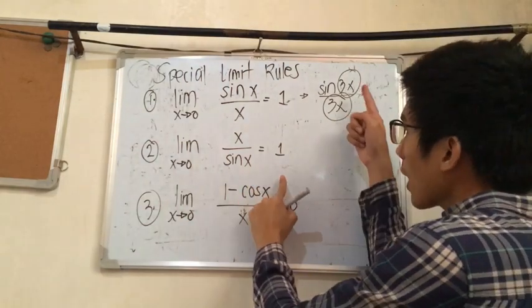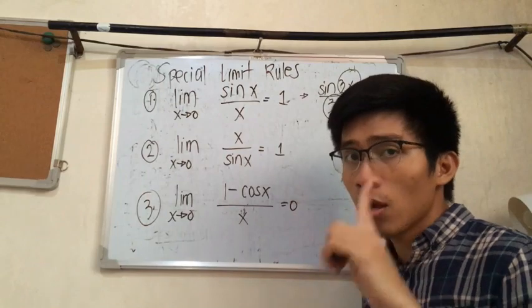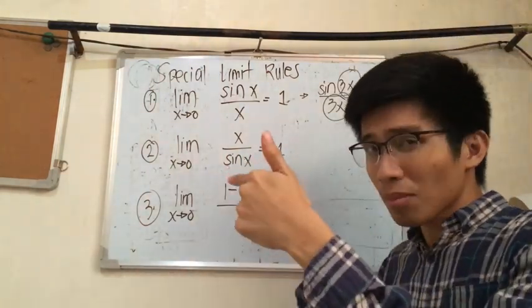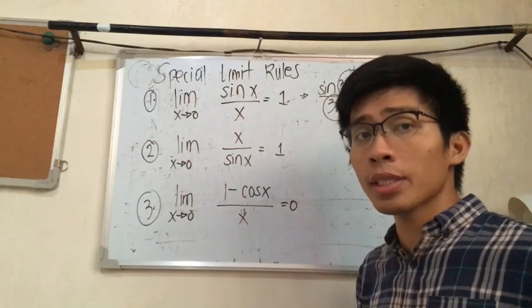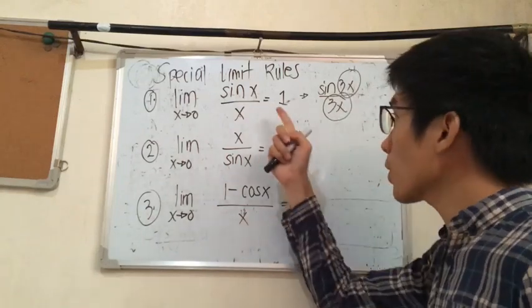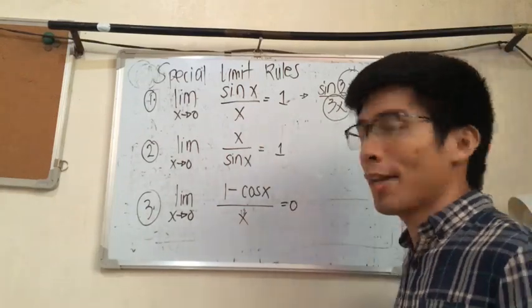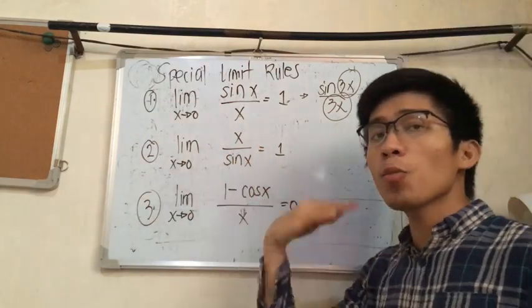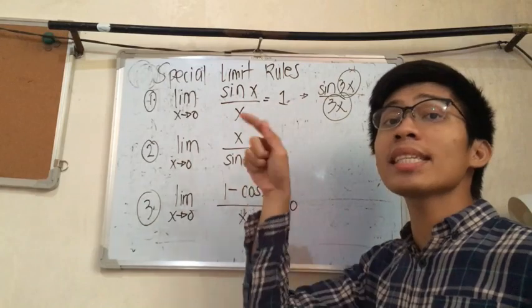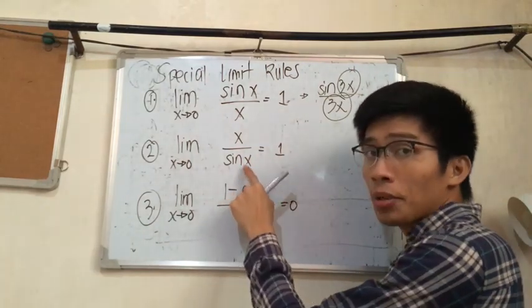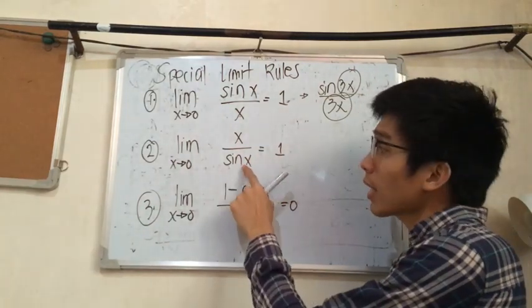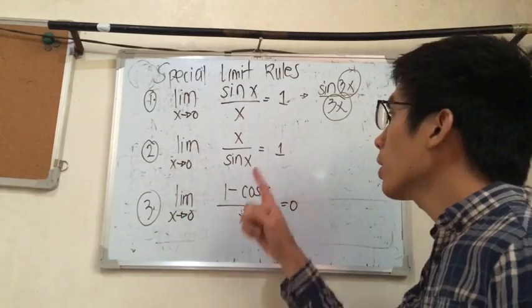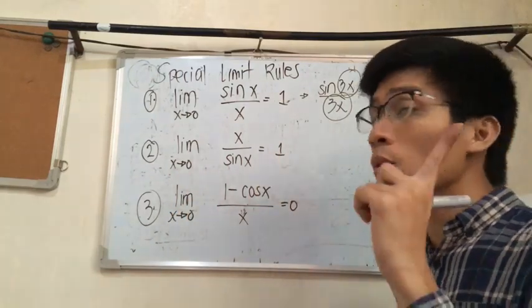For the second special limit rule, it is simply the reciprocal of rule number one. Make sure the variable in the numerator is the same as the variable inside the sine function. Since x approaches zero, the limit is also one. So this is the same as 3x over sine 3x, and the limit is one.